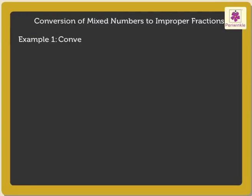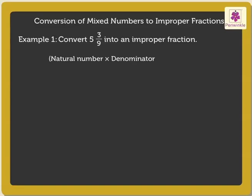Convert 5 and 3 upon 9 to an improper fraction. To solve this, we use the formula: open bracket, natural number into denominator, close bracket, plus numerator upon denominator.